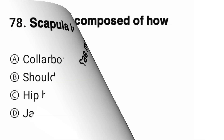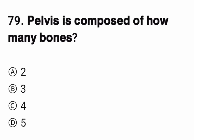Question number 79. The pelvis is made of how many bones? The correct option is B, three.